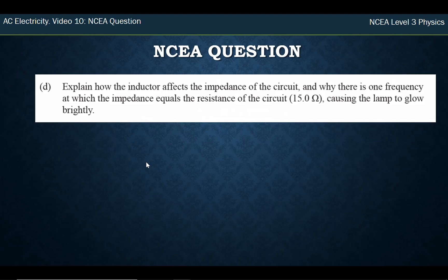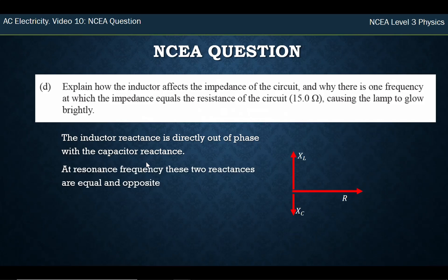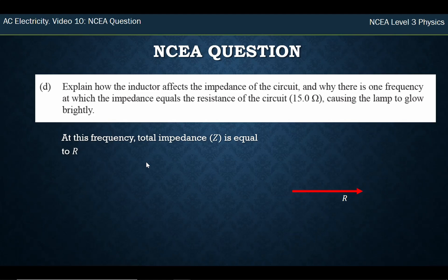Explain how the inductor affects the impedance and why there's one frequency at which impedance equals resistance. The inductor reactance is always out of phase with the capacitor reactance. At the resonant frequency, those two reactances are equal and opposite — so they cancel out. I can draw them cancelling out on the phasor diagram. When they cancel out at that frequency, the total impedance is just what's left — it equals R.